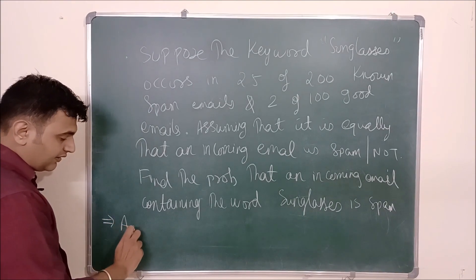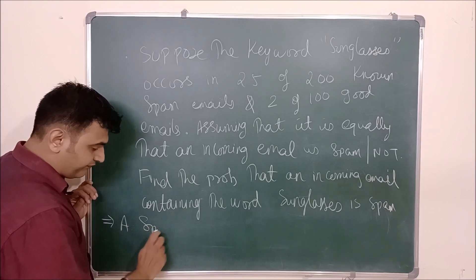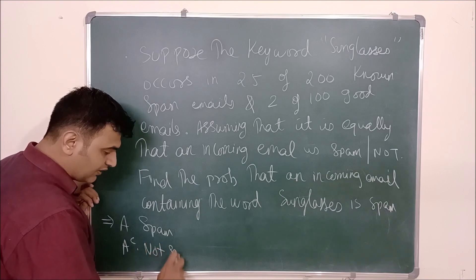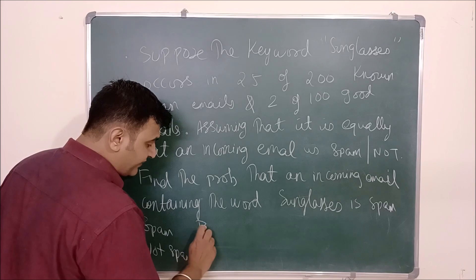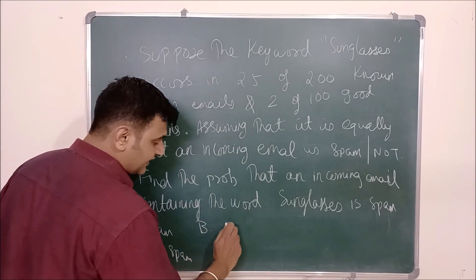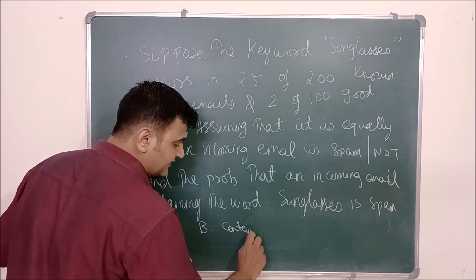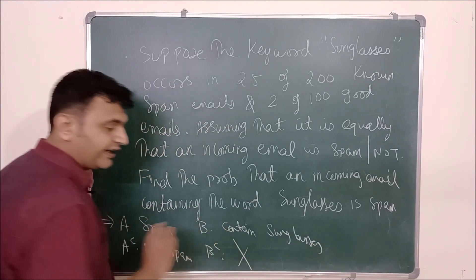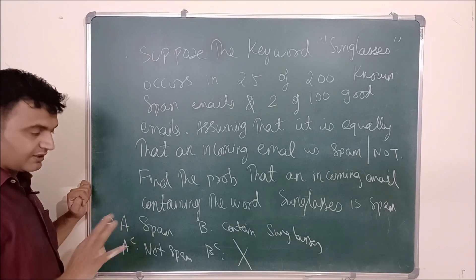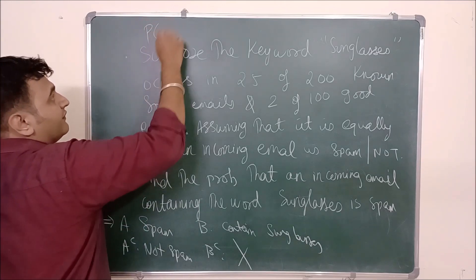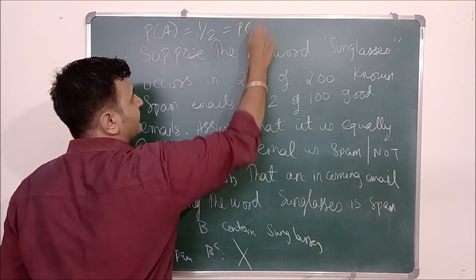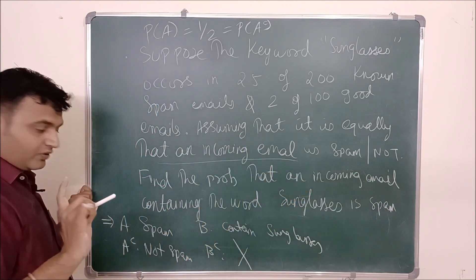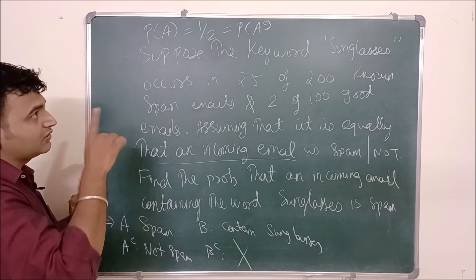We need to find the probability that an incoming email containing the word 'sunglasses' is spam. Let A be the event that the email is spam, A-complement that it is not spam, B that it contains the word 'sunglasses', and B-complement that it does not. Since spam and non-spam are equally likely, P(A) = P(A-complement) = 1/2.